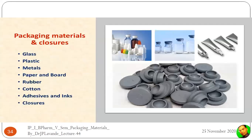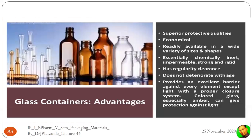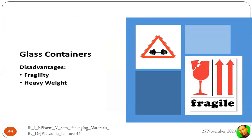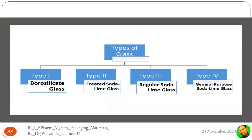The disadvantages of glass are that it is highly fragile and heavy. Regarding types of glass materials: Type 1 is borosilicate glass, used for parenteral preparations because it is the purest glass with minimal leaching of substances into the product. Type 2 is treated soda lime glass. Type 3 is regular soda lime glass. Type 4 is general purpose soda lime glass, used for most products like solutions, suspensions, and emulsions.